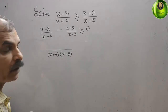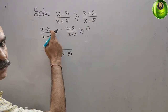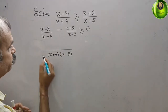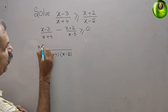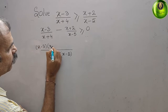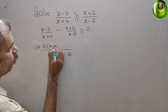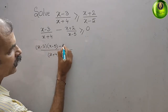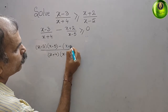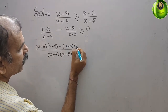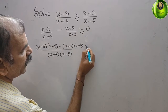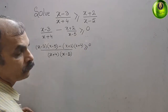So here what you will get: the numerator becomes (x minus 3) into (x minus 5), minus (x plus 2) into (x plus 4), greater than or equal to 0.